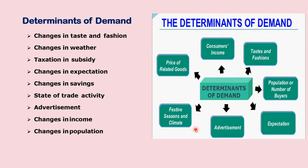The first determinant is changes in taste and fashion. Suppose if there is a change in your taste or my taste — so long I have been wearing a sari, now I have a taste to wear modern clothes. So, I stop buying sari and I start buying fashionable modern clothes. When there is a change in the taste or a change in fashion, what happens?